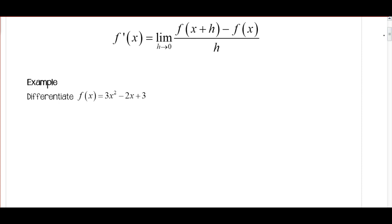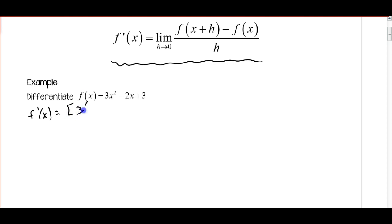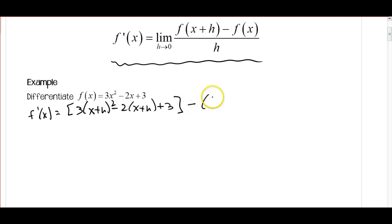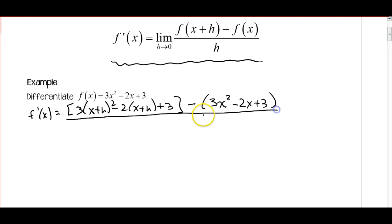Another way you may see this is it might say differentiate — we want to find the derivative. We're going to use our theorem here. So f prime of x is going to be 3 times x plus h squared minus 2 times x plus h plus 3, substituting in x plus h for all our x's. Then we subtract f of x: 3x squared minus 2x plus 3, and this is all over h.